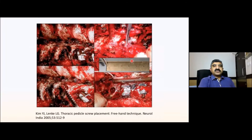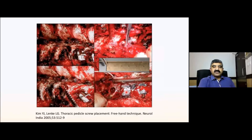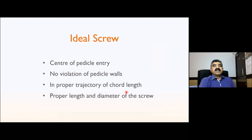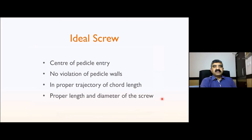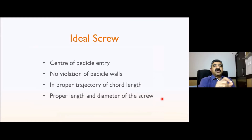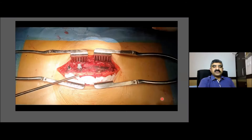Measurement of screw length and then insertion of the screw. An ideal screw in the thoracic spine should be in the center of the pedicle with no violation of the pedicle walls, a proper trajectory, and correct cord length and screw diameter.